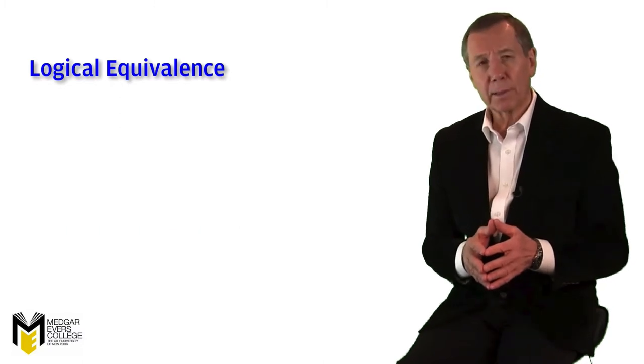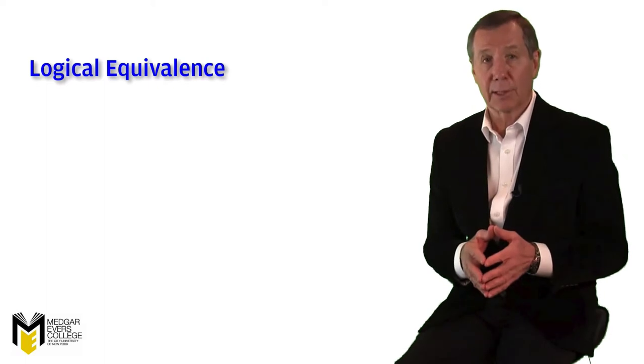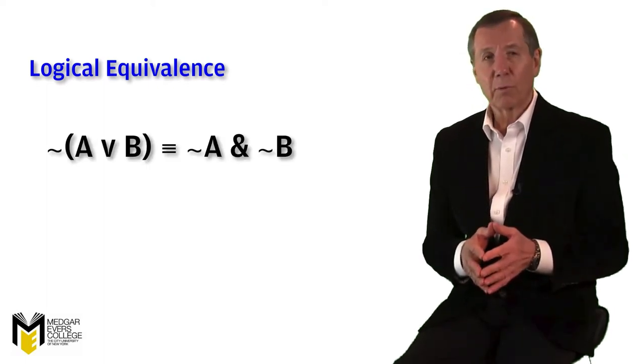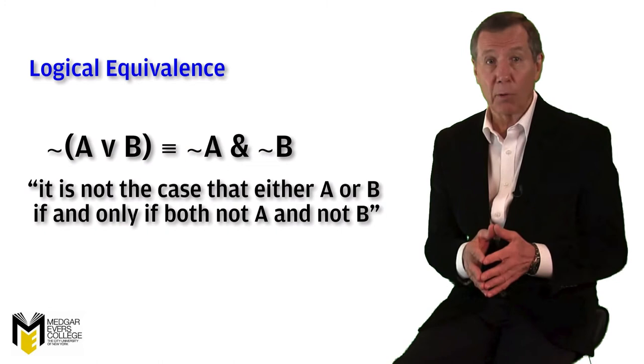Let's use one of DeMorgan's equivalences, which we introduced in our last unit, as an example. Remember this? We read this as: it is not the case that either A or B, if and only if, both not A and not B.